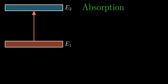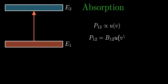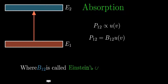For absorption, incident energy is required. The probable rate of transition from E1 to E2, P12, is directly proportional to U(ν), the incident energy density. To make this proportional equal, we multiply by a constant B12, so P12 = B12 × U(ν), where B12 is called the Einstein coefficient of absorption and U(ν) is the incident energy density.